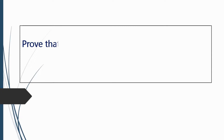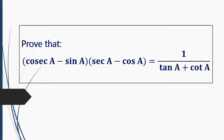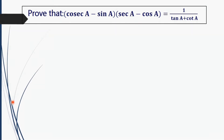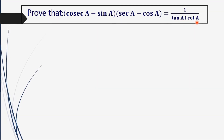Trigonometry. Prove that (cosec(a) - sin(a)) × (sec(a) - cos(a)) equals 1 divided by (tan(a) + cot(a)).